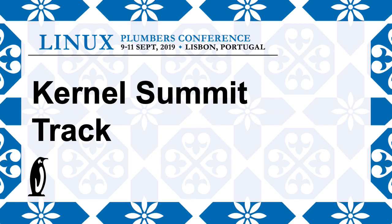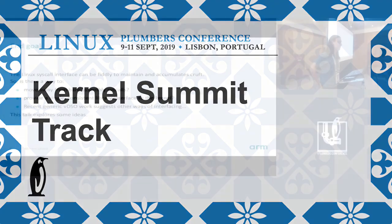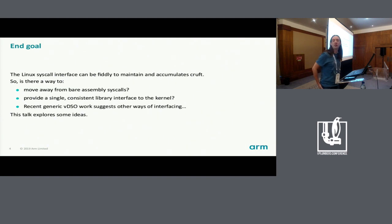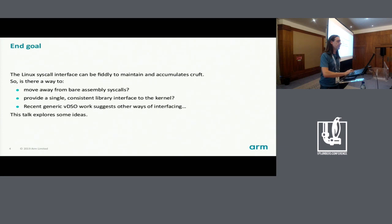I was wondering whether there was a way that we could move over from using bare machine-level system calls and provide something that looks more like a library interface that user space can call. There's been some recent discussions and work that suggests this is an interface that may work. The generic BDSO work has looked at deploying the BDSO interface across multiple architectures, and my work explores some ideas about how we might make use of that for all system calls.